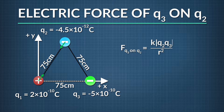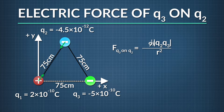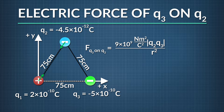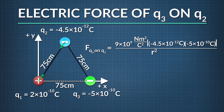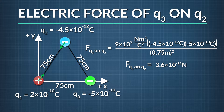Just like with q1, we'll solve for the magnitude and direction of that force. By Coulomb's Law, the magnitude of the force of q3 on q2 is k, 9 times 10 to the ninth newton meters squared per coulomb squared, times the absolute value of q2, negative 4.5 times 10 to the negative twelfth coulombs, times q3, negative 5 times 10 to the negative tenth coulombs, divided by the distance r23, or 0.75 meters squared.